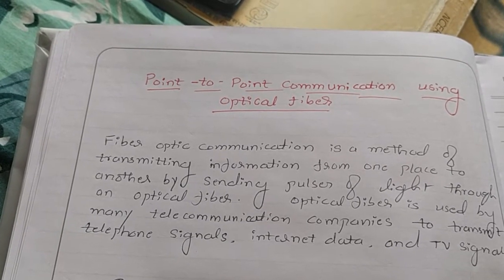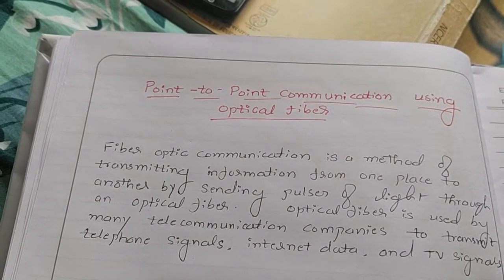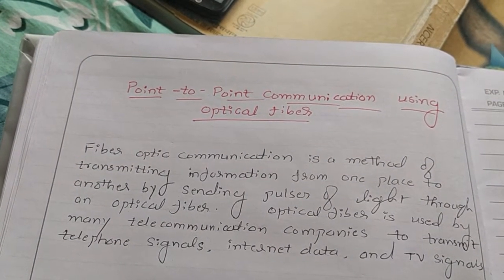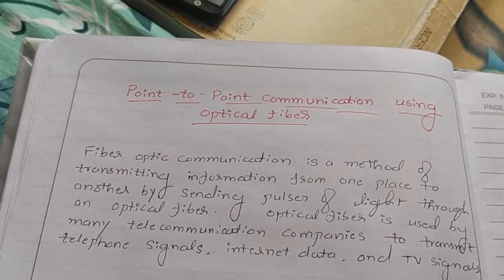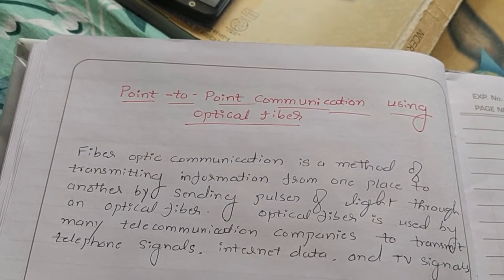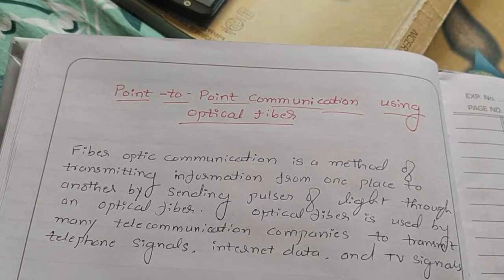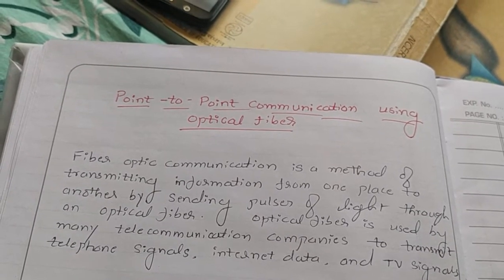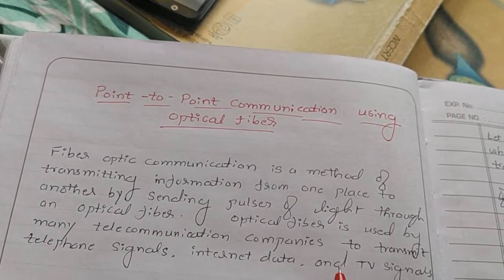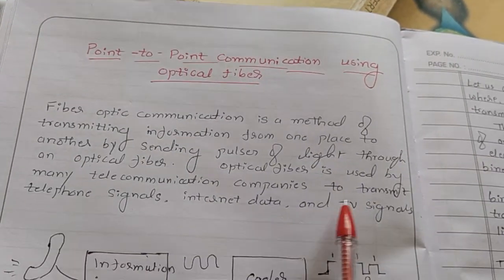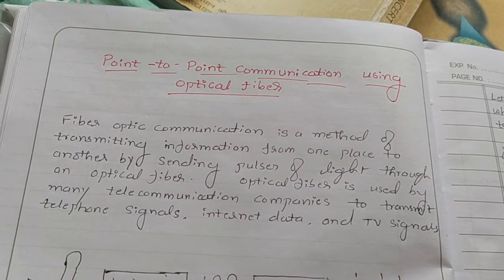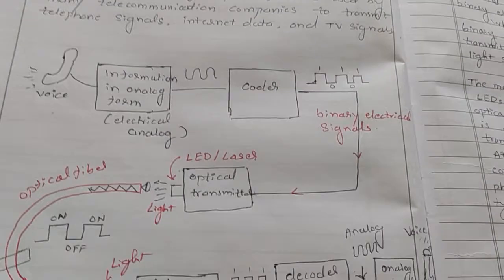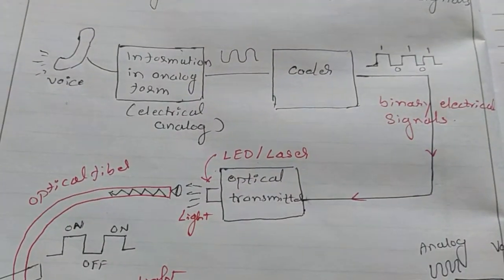Welcome back. Let us consider the application of optical fiber in a point-to-point communication system. In optical fiber communication, the optical signal or pulses of light are transmitted using optical fiber. The transmission is based on the principle of total internal reflection. Most telecom companies nowadays use optical fiber to transmit telephone signals, internet data, and TV/cable TV signals.